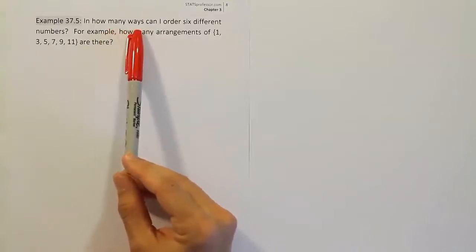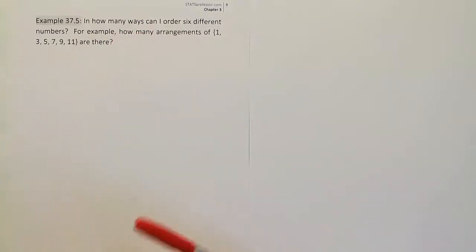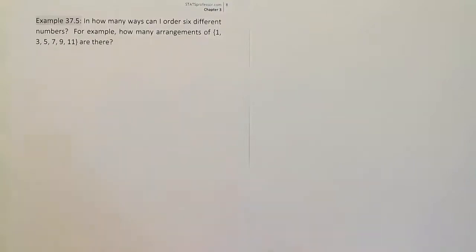So the fundamental counting rule, remember, takes something like this and breaks it into a set of steps. If I have to figure out the different ways I can arrange six numbers, one way I can do that is to create six spots.